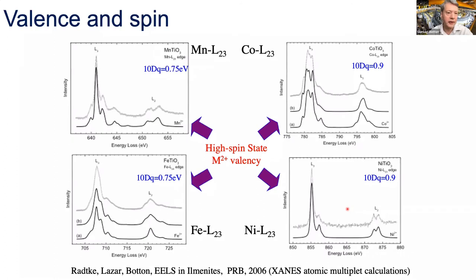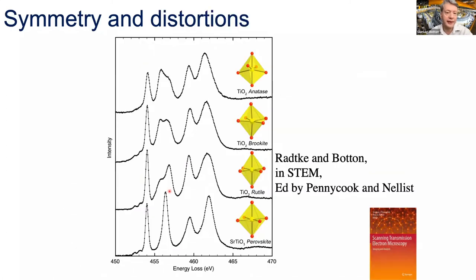Early work with monochromators on ilmenites — transition metal titanium oxides including manganese, cobalt, iron, and nickel ilmenites — showed that high energy resolution energy loss spectra enable multiplet calculations providing crystal field and spin state information for direct spectral interpretation. Another example shows titanium dioxide in different polymorphs: anatase, brookite, and rutile, and the perfect octahedral case of strontium titanate.